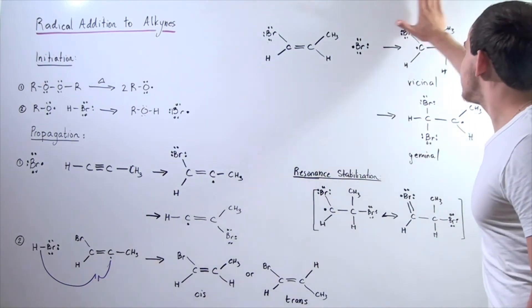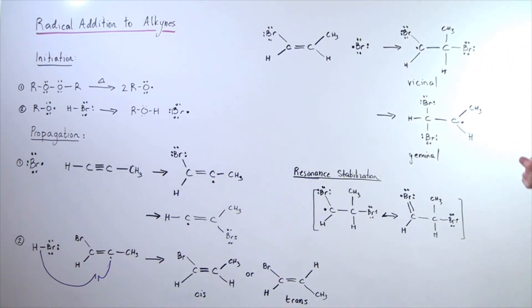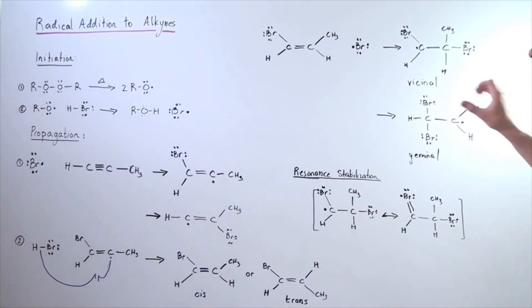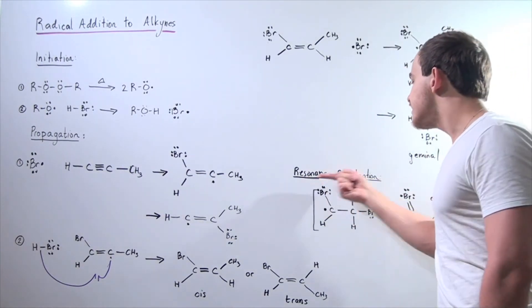Well, it turns out that this is the one that predominates. Why is it that this predominates and not this? The answer lies in resonance stabilization.